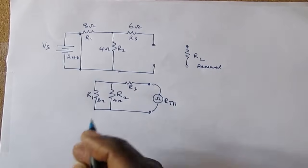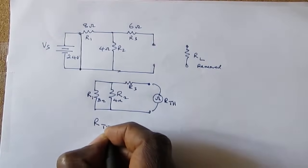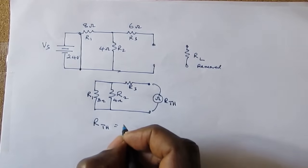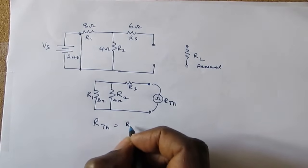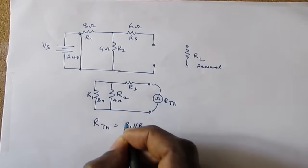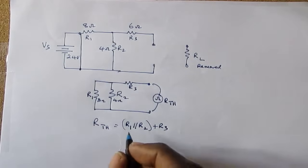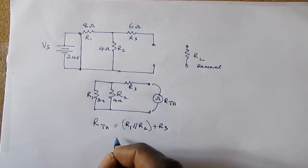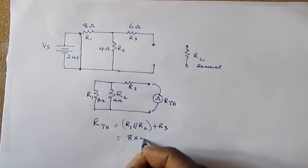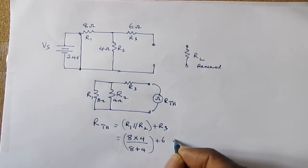We can write that R Thevenin equals R1 in parallel with R2 plus R3. This gives R2 plus 6 ohms, which equals 8 by 4 over 8 plus 4 plus 6 ohms.